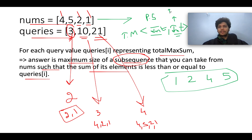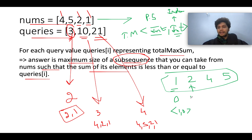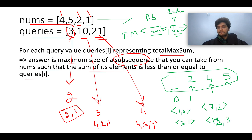Let's start dumping data into the TreeMap. The current prefix sum is 1 and it occurs at index 0, so we add entry (1, 0). The next sum is 1 plus 2 equals 3, occurring at index 1 — so we add (3, 1). Then 3 plus 4 is 7 at index 2 — we add (7, 2). Finally, 7 plus 5 is 12 at index 3 — we add (12, 3).